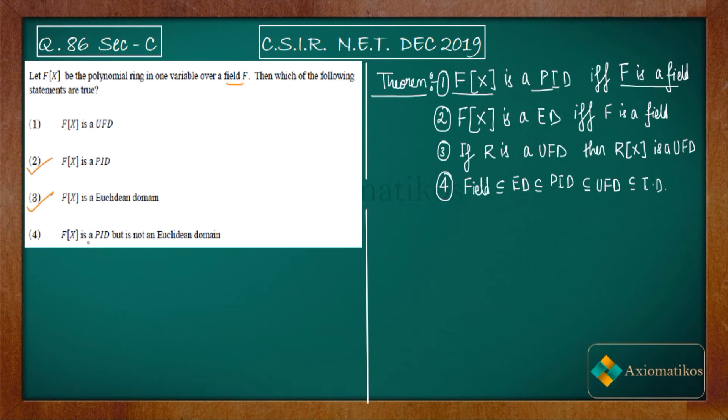The fourth one says f(x) is a PID but not a Euclidean domain. Now we already know that it is a Euclidean domain, so that means the fourth one is incorrect. Now let us talk about the first one, because it